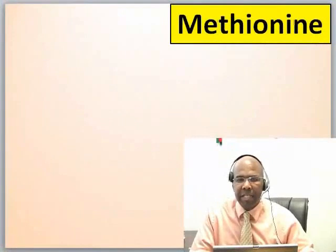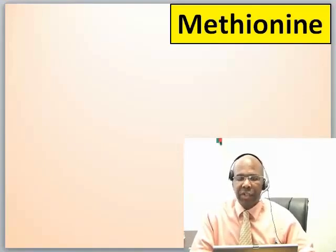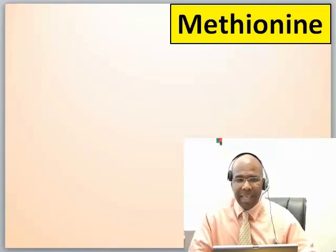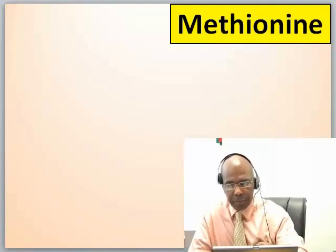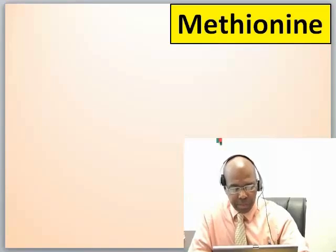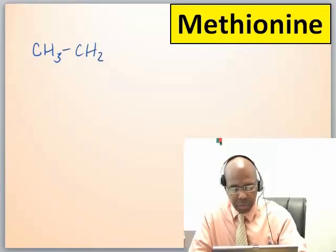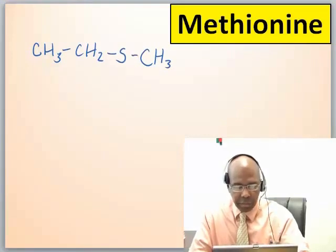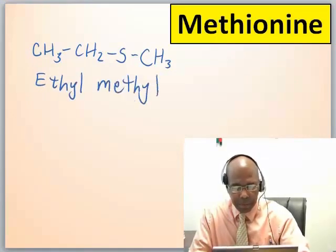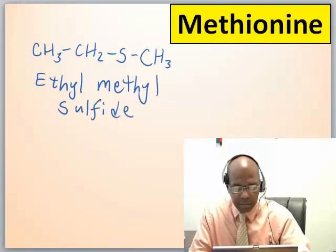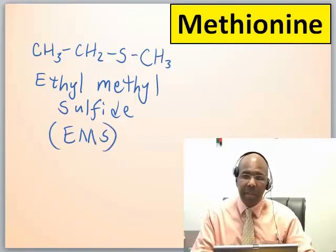The next amphipathic amino acid is methionine. The parent of the R group for methionine is going to be ethylmethyl sulfide. So we draw an ethyl group (CH3-CH2), a methyl group (CH3), and joining the two, a sulfur. This compound is ethylmethyl sulfide, which we can abbreviate EMS.